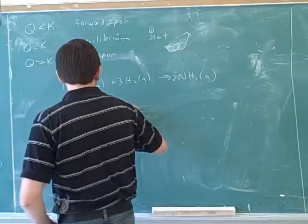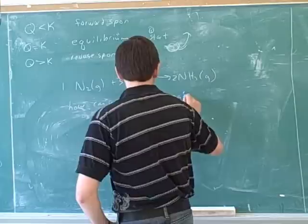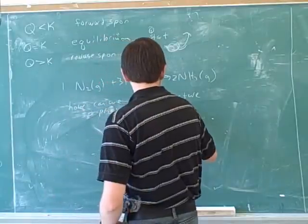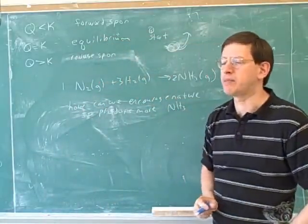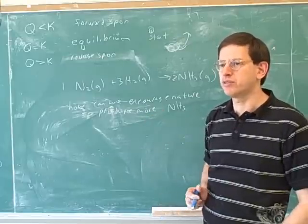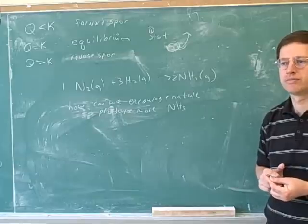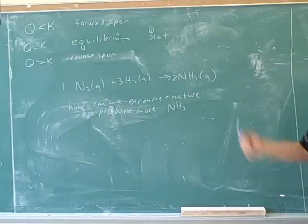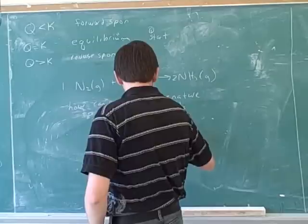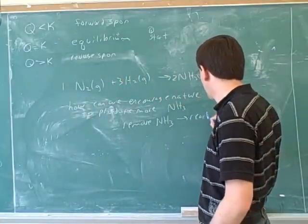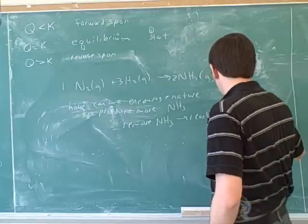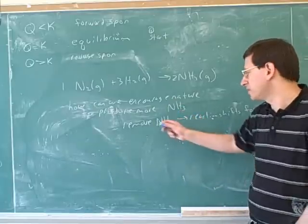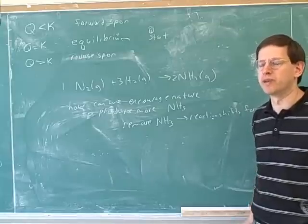So how can we encourage nature to produce more ammonia? If we start at equilibrium, we're not going to be getting any more ammonia, because we're in equilibrium. What could we do then? What disturbance could we impose that would make nature make more ammonia? Besides remove ammonia? Let's try that. If you remove ammonia, which way will the reaction shift? Forward. So that worked. It'll shift forward and produce more ammonia. Of course, when you removed the ammonia, you've hopefully stored it someplace, so you'll now have both the ammonia you removed and the new ammonia that was made in the reaction, so you've got more ammonia than when you started.